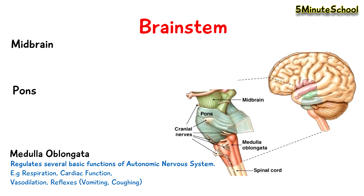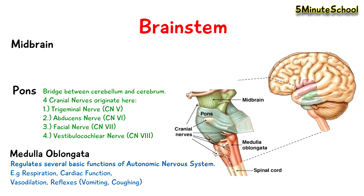The pons is this region here and it's like a bridge between the cerebellum and the cerebrum. The pons is in fact where four cranial nerves originate. Those cranial nerves are the trigeminal nerve, the abducens nerve, the facial nerve, and the vestibulocochlear nerve.